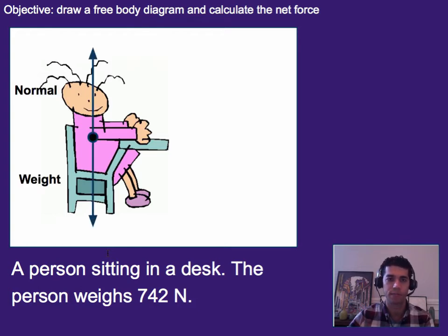Alright, welcome back. So in this case, if we draw a free body diagram, we can start by imagining that there are two forces on this person. Namely, the normal force, that's the force on the desk, as well as their weight, that's the force due to gravity pulling them down.